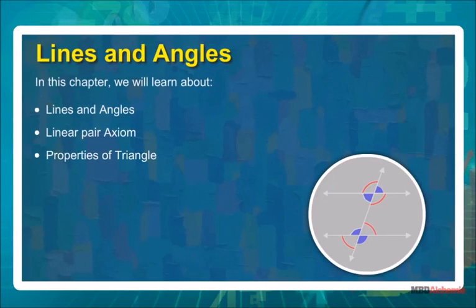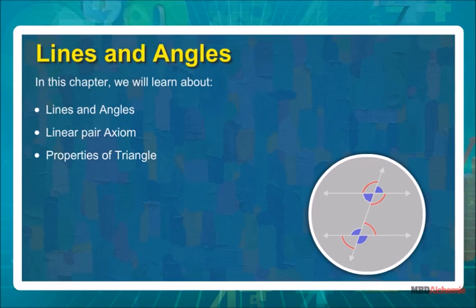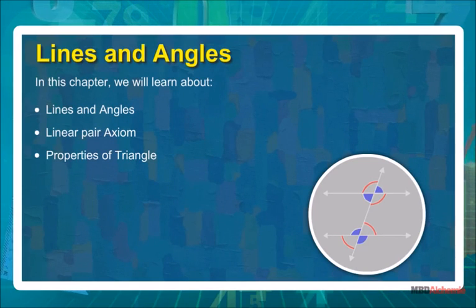In this chapter, we will learn about Lines and Angles, Linear Pair Axiom, and Properties of Triangle.